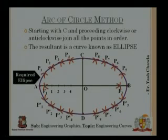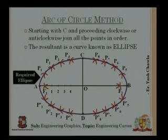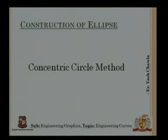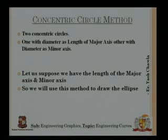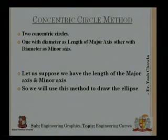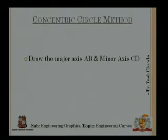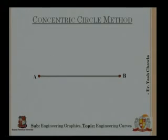This is the required ellipse by the arc of circle method. Practice it multiple times to get comfortable. The next method is the concentric circle method. Again, we are given the lengths of the major and minor axes. We construct two concentric circles — one with diameter equal to the major axis and one with diameter equal to the minor axis — both centered at O.